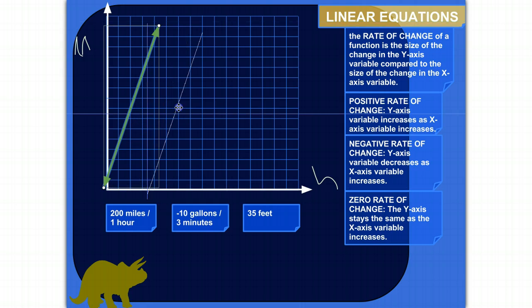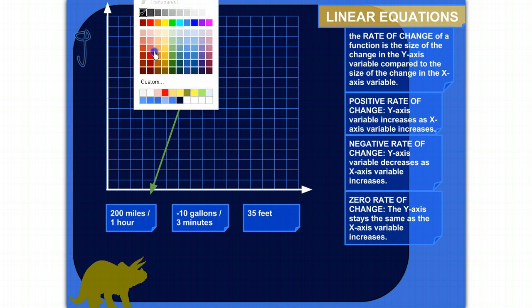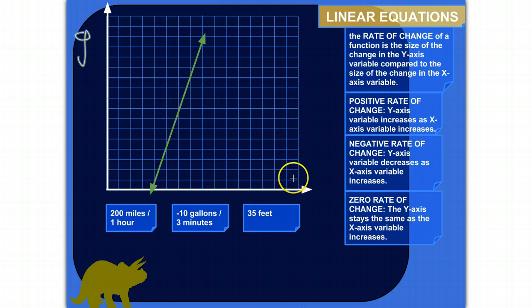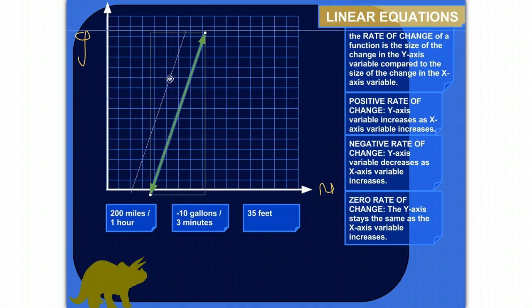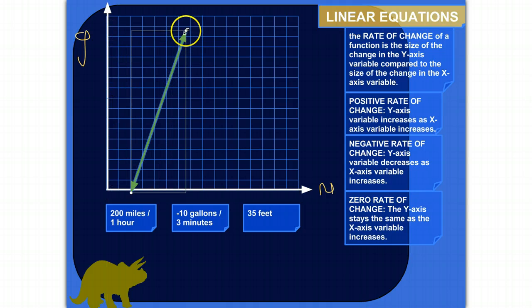Another example might be negative 10 gallons per 3 minutes, just to kind of pick something random. So say like I'm measuring the amount of milk in a giant milk jug, and so I'm measuring gallons on the y. Let's make it kind of yellow. It's kind of spoiled milk. Sorry, that's kind of gross. And then minutes on the x-axis. So as we go, as we increase on the x-axis, so as, you know, 1 minute, 2 minute, 3 minutes, the amount of milk in that container is actually decreasing by 10 each time. So what that would look like is something like, you know, roughly like that.